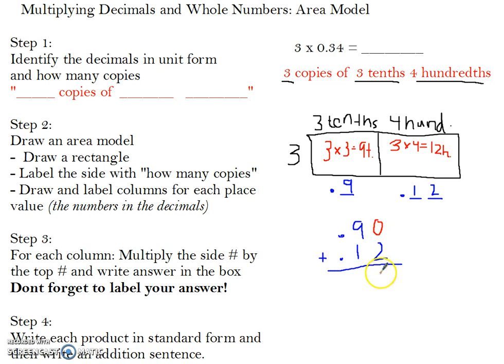So now I solve, which is 0 plus 2 is 2. 9 plus 1 is 10, but since I can only have one number, I have to carry. So I put my 0 here for the 10, and I carry the 1. I make sure that I drop my decimal down, and then in my 1s column, I just have a 1.